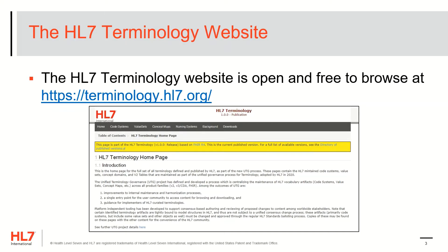HL7 terminology artifacts are accessible through the new HL7 terminology webpage at terminology.hl7.org. There was previously no simple way to browse the full set of terminology artifacts published by HL7. For those of you familiar with FHIR, the HL7 terminology pages should look and feel very similar, since the pages are built using the same tooling used to build the FHIR implementation guide. These pages are freely accessible to anyone with an internet connection and web browser.